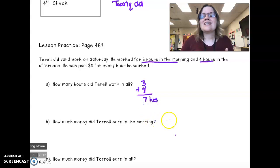How much did Terrell earn in the morning? So, if he's making $6 an hour and he worked three hours in the morning, that would be $18. Not too shabby.